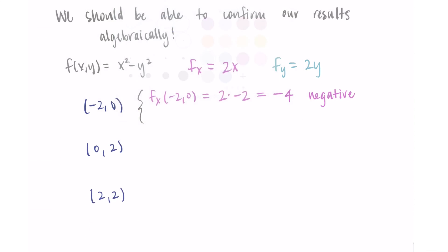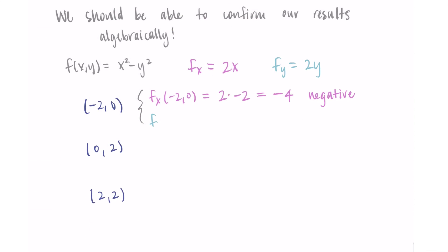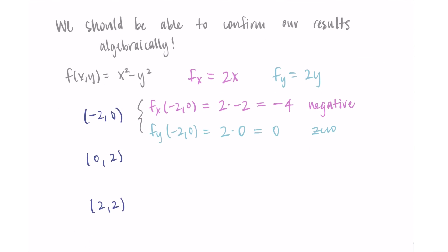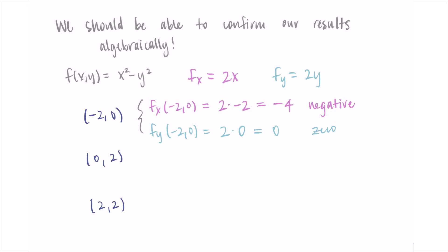For the partial derivative with respect to y at negative 2, 0: substituting 0 for y gives 2 times 0, which is 0. This is the 0 partial derivative we also got previously. The idea is that if you have an equation to work with, you can do this all algebraically, and it's also nice to be able to do it with the graph.